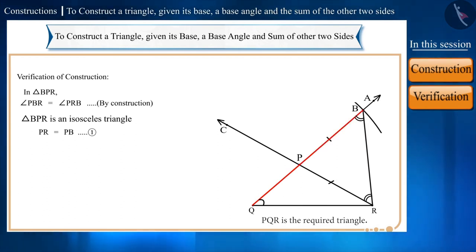Side PQ and side PB together form side BQ. Therefore, we will write it like this using equation 1. Hence, the sum of the other two sides is equal to the sum of the other two constructed sides. Therefore, the construction done is correct.